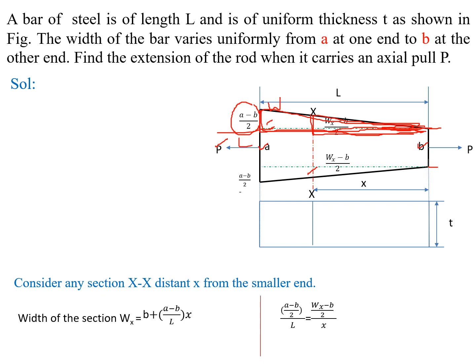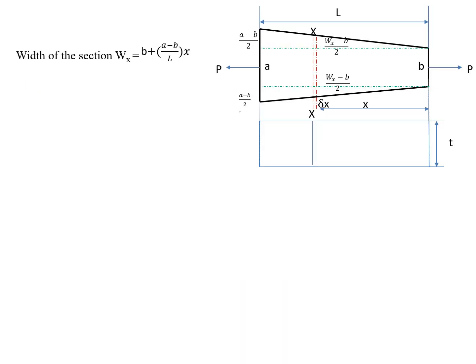From the similar triangles relation, (a minus b) divided by L equals (wx minus b) divided by x. Rearranging, wx equals b plus (a minus b) divided by L into x. Let us consider (a minus b) divided by L equal to k, then the width of the section wx equals b plus kx.